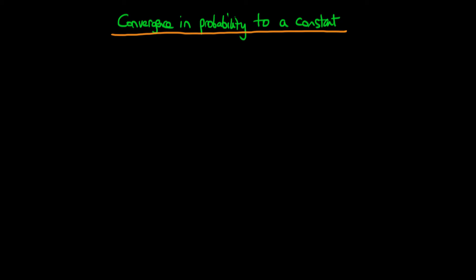In this video I wanted to provide some graphical intuition as to what it means for a random variable to converge in probability to a constant. I'm going to use two examples.